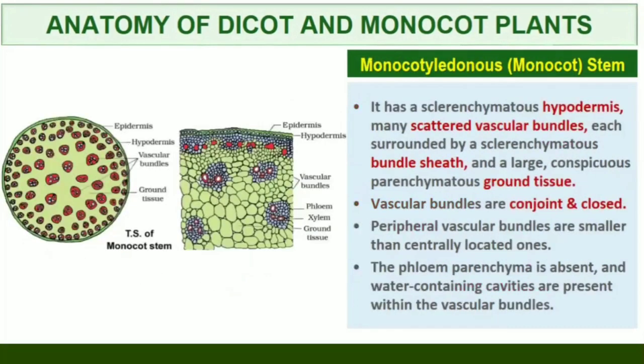Monocotyledonous Stem. The monocot stem has a sclerenchymatous hypodermis, a large number of scattered vascular bundles each surrounded by a sclerenchymatous bundle sheath, and a large conspicuous parenchymatous ground tissue. Vascular bundles are conjoint and closed. Peripheral vascular bundles are generally smaller than the centrally located ones. The phloem parenchyma is absent, and water-containing cavities are present within the vascular bundles.